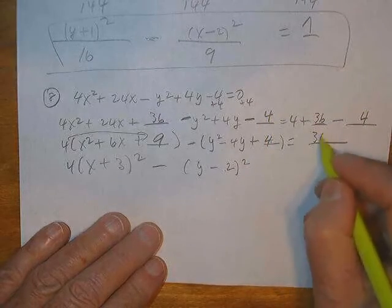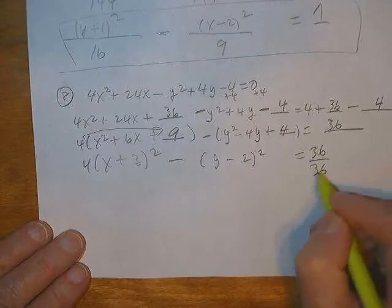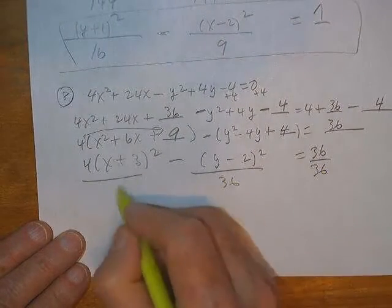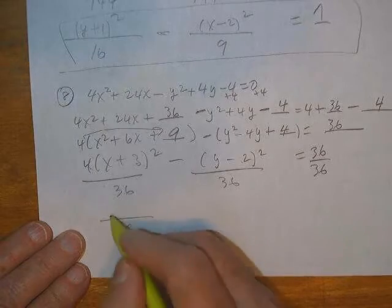40 minus 4, 36. Divide 36 by 36 and we're done. 4 into 36. That's going to be a 9 down here.